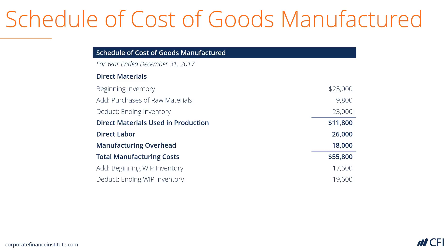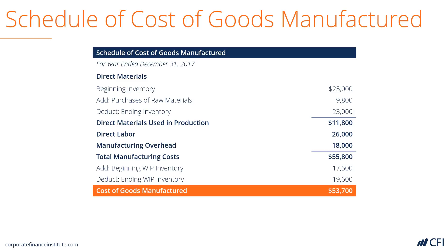Next, we take the beginning work in progress inventory and deduct the ending work in progress inventory, so that we get the total cost of goods manufactured — 53,700 in this case.